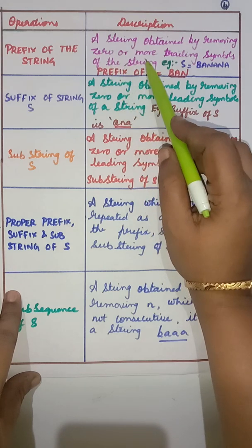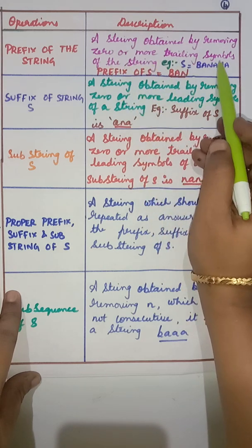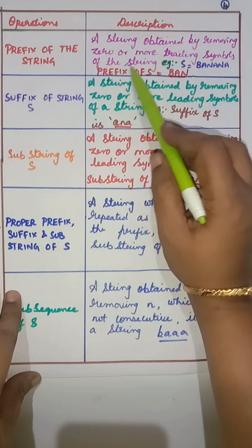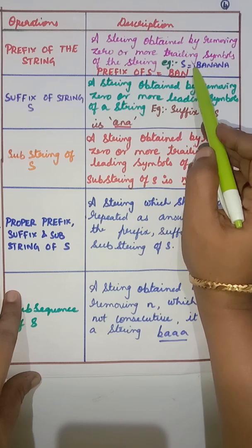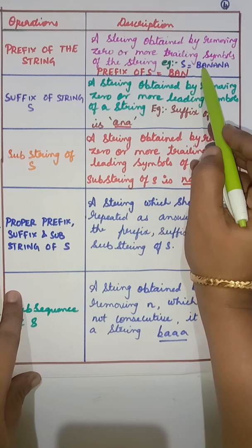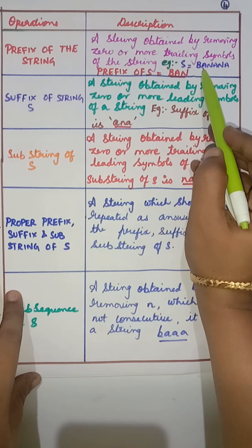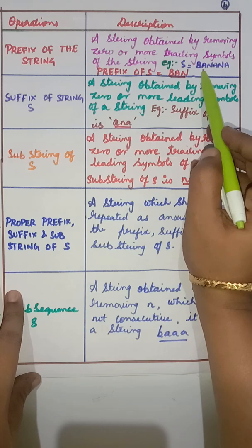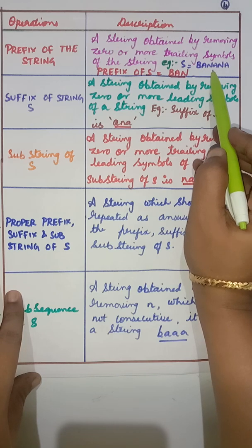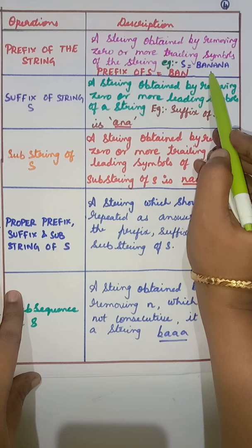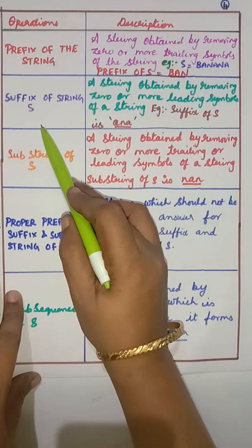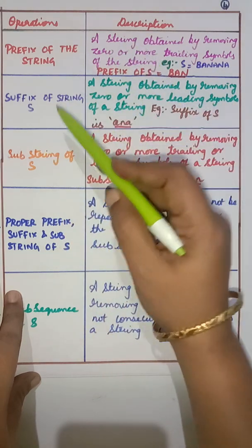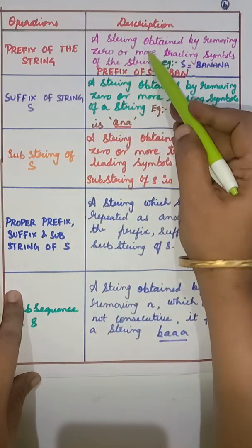Prefix of a string: a string obtained by removing zero or more trailing symbols of the string. For example, consider 'banana' as a string — removing the trailing symbols gives us 'ban'. This is what is called the prefix of s.